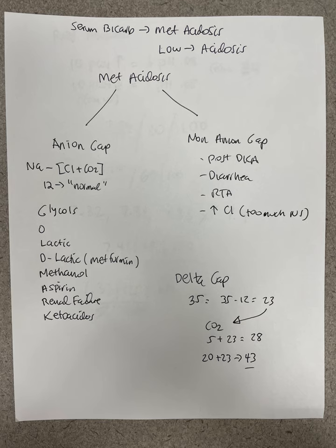The delta gap is: how far is the anion gap from a normal anion gap? For example, someone comes in with an anion gap of 35. The delta gap is 35 minus 12 — that equals 23. You take that 23 and add it back to the serum bicarbonate. If the serum bicarb is 5, the corrected bicarb is 28, which is normal — so you have a pure anion gap metabolic acidosis.